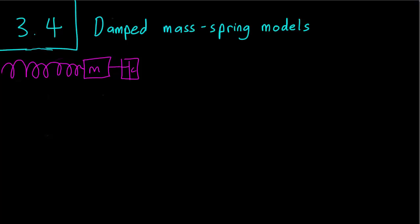Hello class, this is section 3.4 and we are going to discuss some damped mass-spring models. This simply means that we have a spring attached to a mass and there's going to be something stopping the spring motion here.